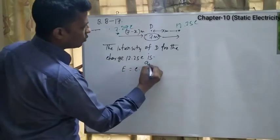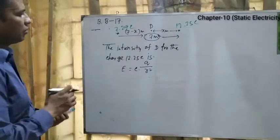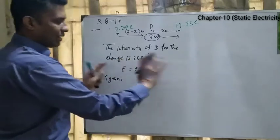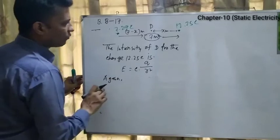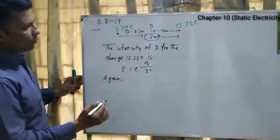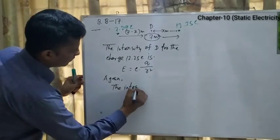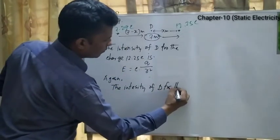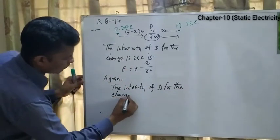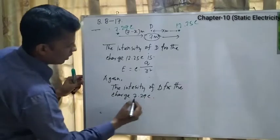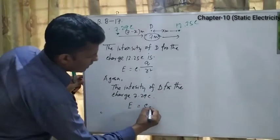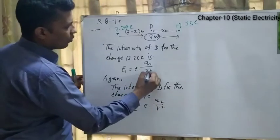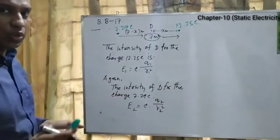We write the intensity at D for charge 12.25 C as E1 = k × Q1 / r1², and the intensity at D for charge 7.29 C as E2 = k × Q2 / r2². We label them E1 and E2, with Q1 and Q2 for the respective charges. Since k is constant, we cannot write k1 or k2.